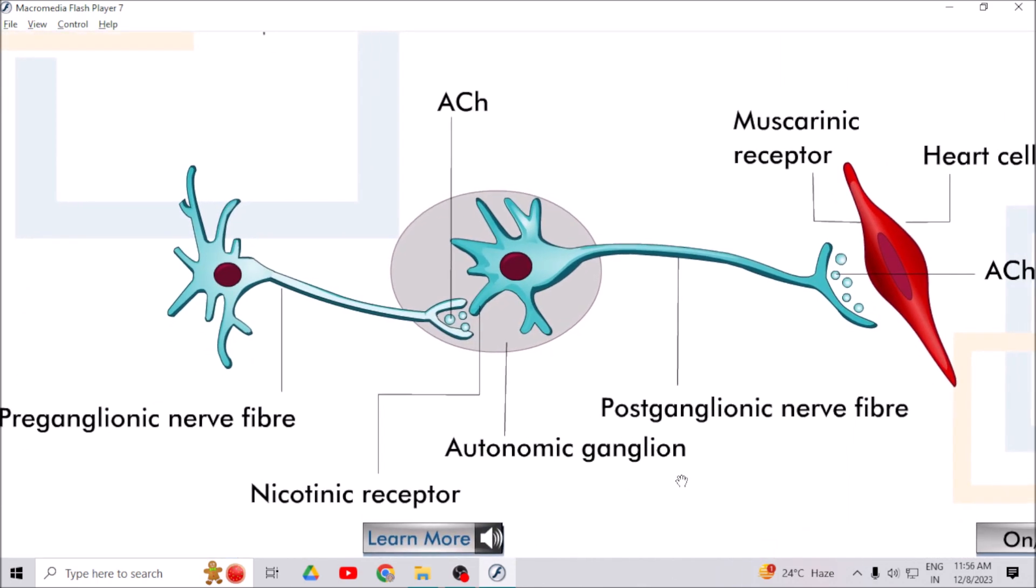The parasympathetic system consists of preganglionic nerve fiber, autonomic ganglion, and postganglionic nerve fiber. Within the ganglion, the preganglionic nerve fiber synapses with the postganglionic nerve fiber which are innervated by nicotinic receptors. Acetylcholine is the neurotransmitter of the autonomic ganglion.